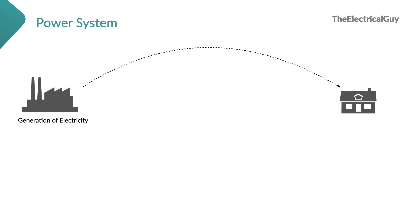Electricity can be generated using different methods — thermal power plants, coal power plants, nuclear power plants, wind energy, or solar energy — converting different forms of energy into electrical energy. This is done at power plants located far away from the end user. Electricity is generated at a relatively low voltage, such as 11 kV or 25 kV, because generating at lower voltages requires smaller, more economically feasible machines.